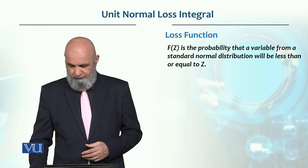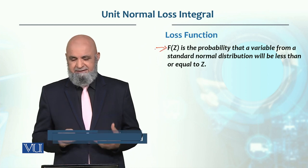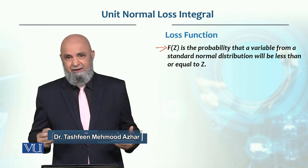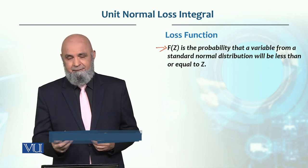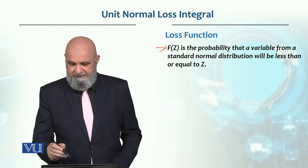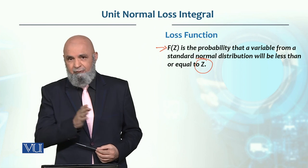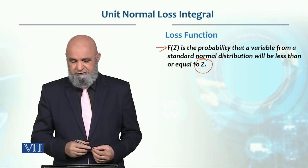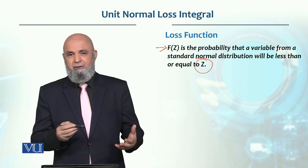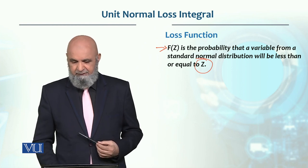This table also gives F(Z), which is basically the cumulative probability corresponding to the value of Z. Z is the number of standard deviations away from the mean. These two are related on a fundamental basis, and in the standard normal table, these values can be derived from one another.